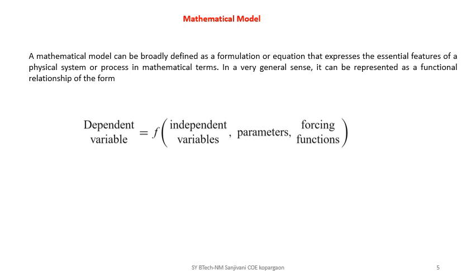What exactly is a mathematical model? A mathematical model is a function of independent variables, parameters, and forcing functions. Whenever you build a mathematical model you must have independent and dependent variables, parameters, and forcing functions to ensure the model exists.